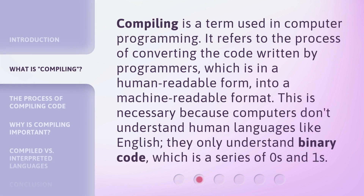Compiling is a term used in computer programming. It refers to the process of converting the code written by programmers, which is in a human-readable form, into a machine-readable format. This is necessary because computers don't understand human languages like English. They only understand binary code, which is a series of zeros and ones.